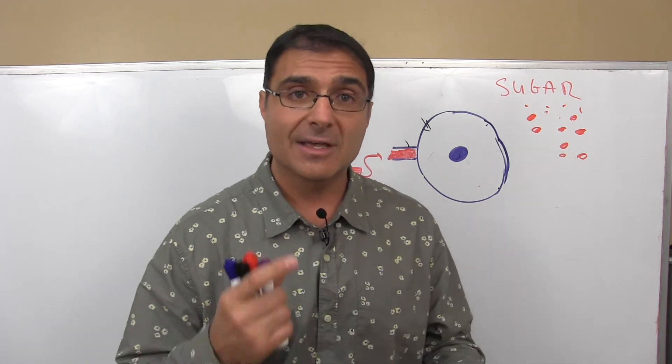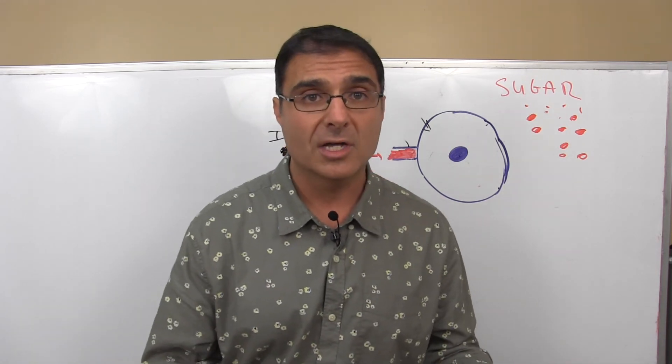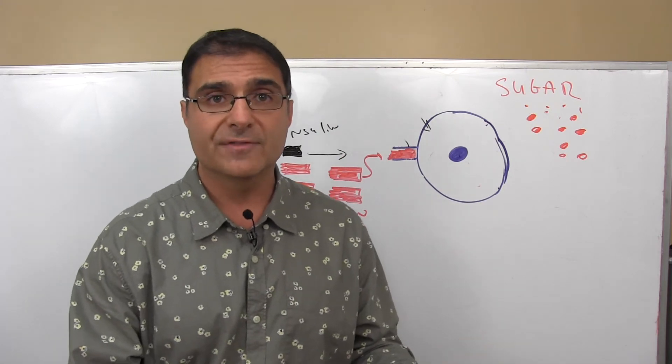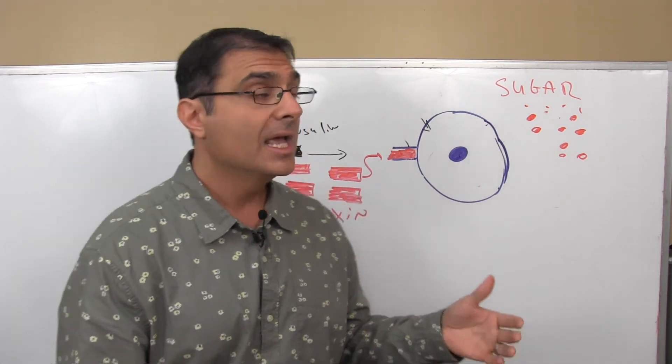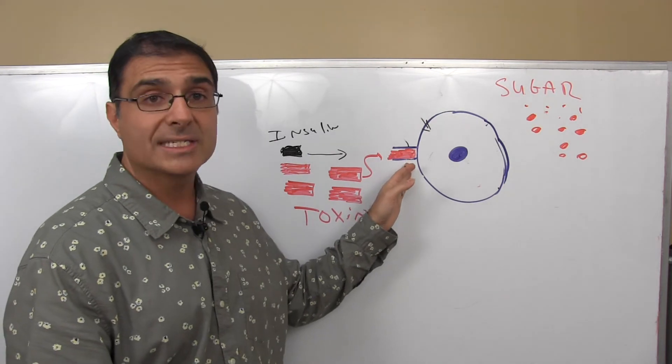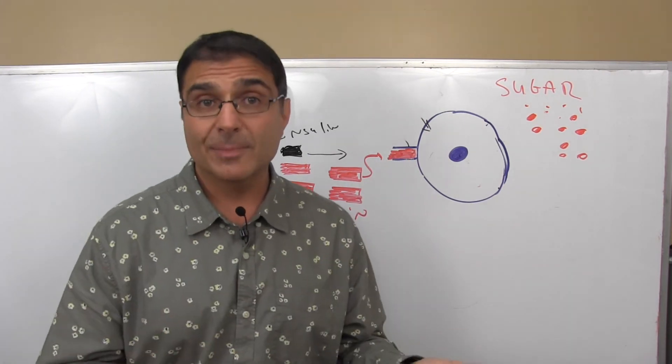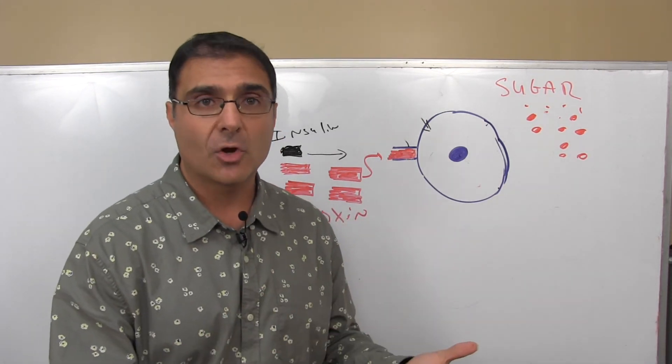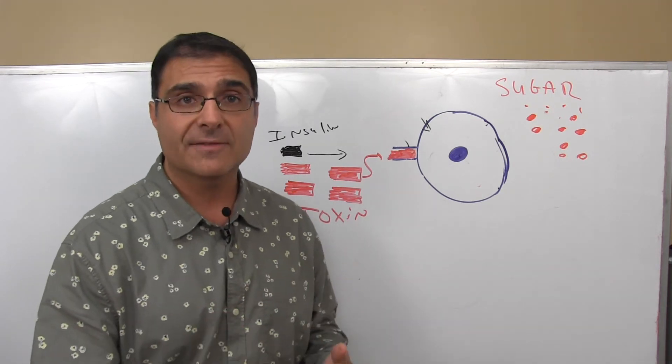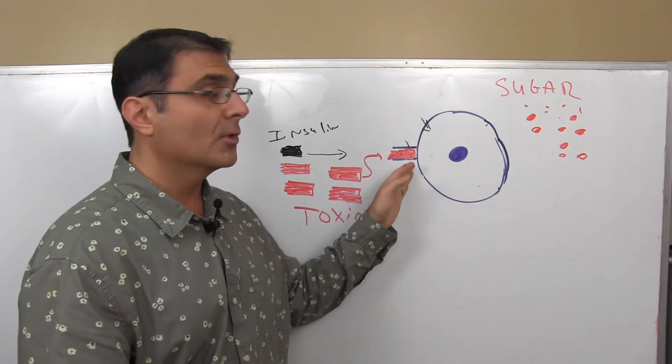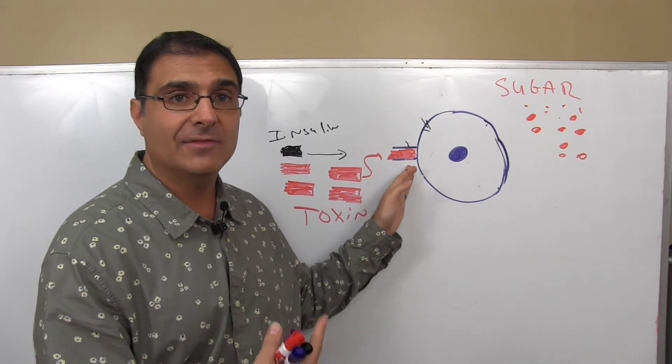So a person that's type 2 diabetic, if they want to help themselves, they got to identify what's my underlying cause. Is it due to nutritional imbalances? If it is, then I need to handle that. Is it due to my receptor being basically broken because I've eaten so many carbohydrates? If there is, there are specific ways that you need to eat to help reset that sensitivity in the receptor.